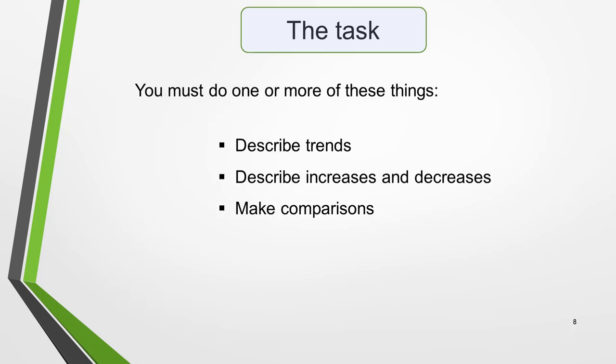The first two steps to writing a great academic Task 1 essay are to analyse the question and identify the key features. I cover these tasks in detail in a separate lesson — you'll find a link to it in the notes below this video. Once you've completed these two steps, you'll understand what you're required to write about. It'll be one or more of these things: describe trends, describe increases and decreases, or make comparisons.